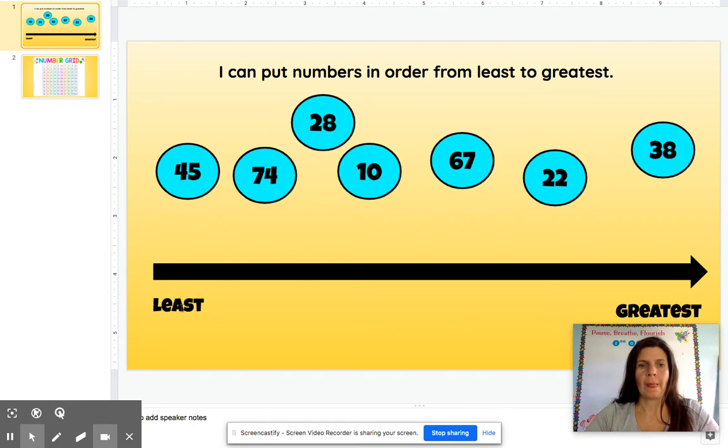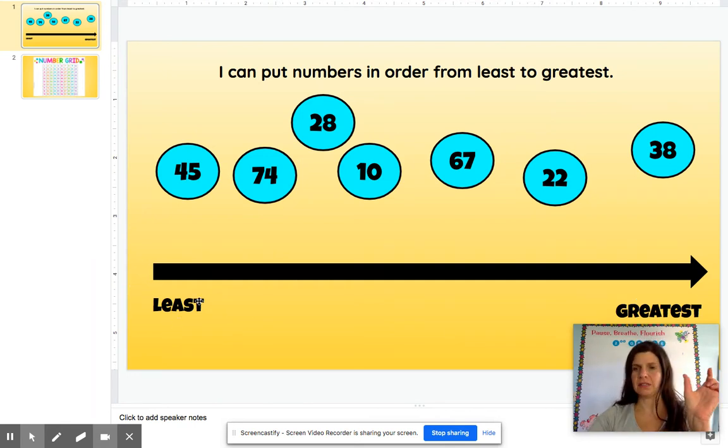Right here is least. Here is greatest. So least means littler number and greatest means a bigger number.